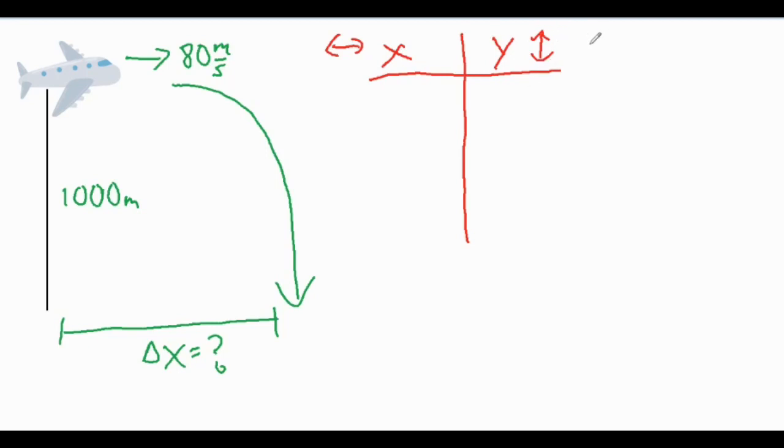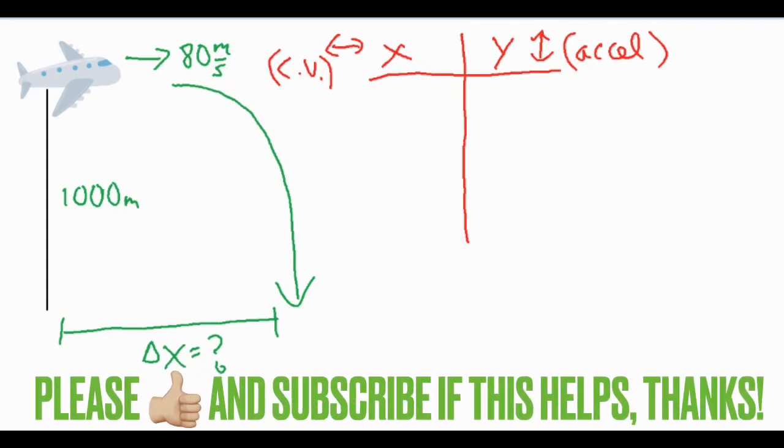In the y column, the motion is accelerated because there is a force, which is the force of gravity acting vertically. And then in the horizontal direction, it's moving at a constant velocity because there are no forces acting side to side once the object is released, assuming that we're ignoring air resistance.